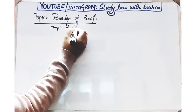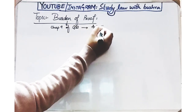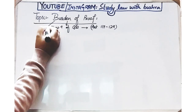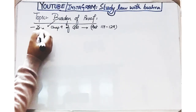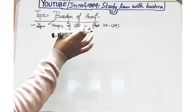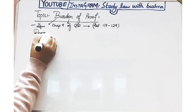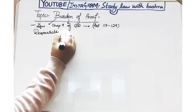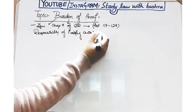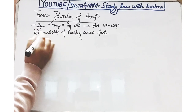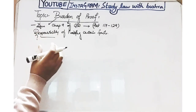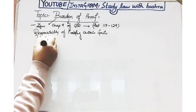Burden of proof کو قانون شہادت order 1984 کے Chapter 9 میں explain کیا گیا ہے اور اس کے relevant articles Article 117 سے Article 129 تک جاتے ہیں۔ قانون شہادت order میں burden of proof کو کسی بھی جگہ پر define نہیں کیا گیا — اس کی کوئی proper definition نہیں دی گئی۔ لیکن سادہ الفاظ میں، burden of proof کا مطلب ہے کہ کسی facts کو proof کرنے کی ذمہ داری کس پر آتی ہے، یعنی the responsibility to prove certain facts۔